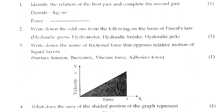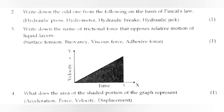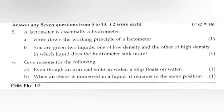Question 3: Write down the name of the frictional force that opposes relative motion of liquid layers. Options: surface tension, buoyancy, viscous force, adhesive force. Answer: viscous force. Question 4: What does the area of the shaded portion of the graph represent? Options: acceleration, force, velocity, displacement. Answer: displacement.